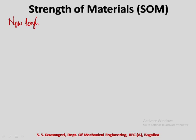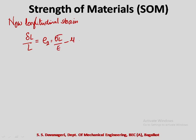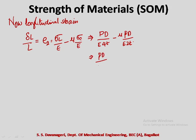Similarly, the longitudinal strain e2 equals delta L by L. Using the formula: e2 = sigma l/E minus mu·sigma c/E. Substituting sigma l = Pd/4t and sigma c = Pd/2t: e2 = Pd/4tE minus mu·Pd/2tE. Rewriting: e2 = Pd/(4tE) times (1 minus 2mu) — equation number 8.